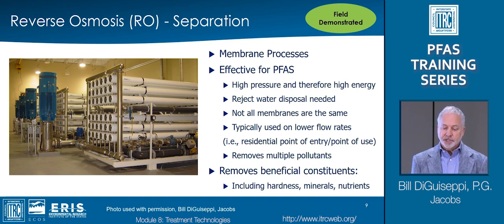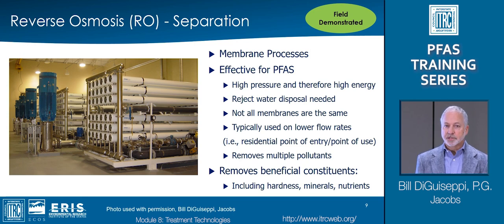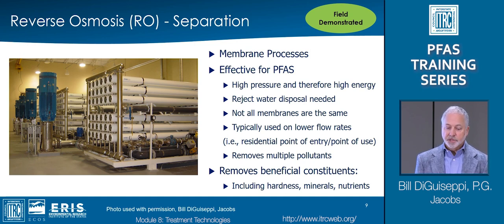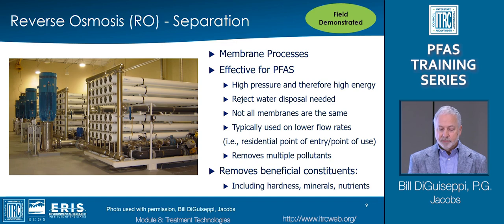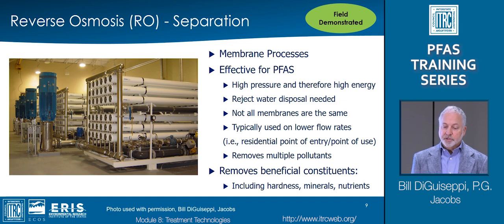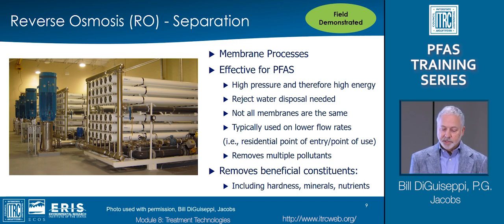Reverse osmosis and other membrane filtration separation methods are widely used for VOCs and other impurities, especially for high-purity water applications like drinking water treatment. RO has been demonstrated to be effective for a wide range of PFAS, but is a high-energy method, and the reject water, which represents one-tenth to one-quarter of the flow, requires additional treatment or disposal. Not all membranes are the same; some are more effective for short-chain versus long-chain PFAS, so care needs to be taken in selecting and designing systems. Reverse osmosis may be suitable for low-flow systems, such as residential point-of-entry systems, but the user should be aware that the system removes almost everything, including hardness, alkalinity, or other beneficial constituents, which may need to be replaced in some drinking water applications.